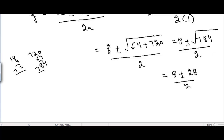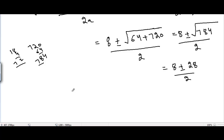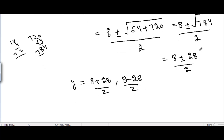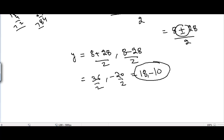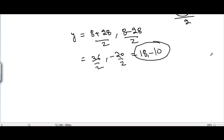Since √784 = 28, we have y = (8 + 28) / 2 or y = (8 - 28) / 2. This gives y = 36/2 = 18, or y = -20/2 = -10. So the value of y is 18 or -10.